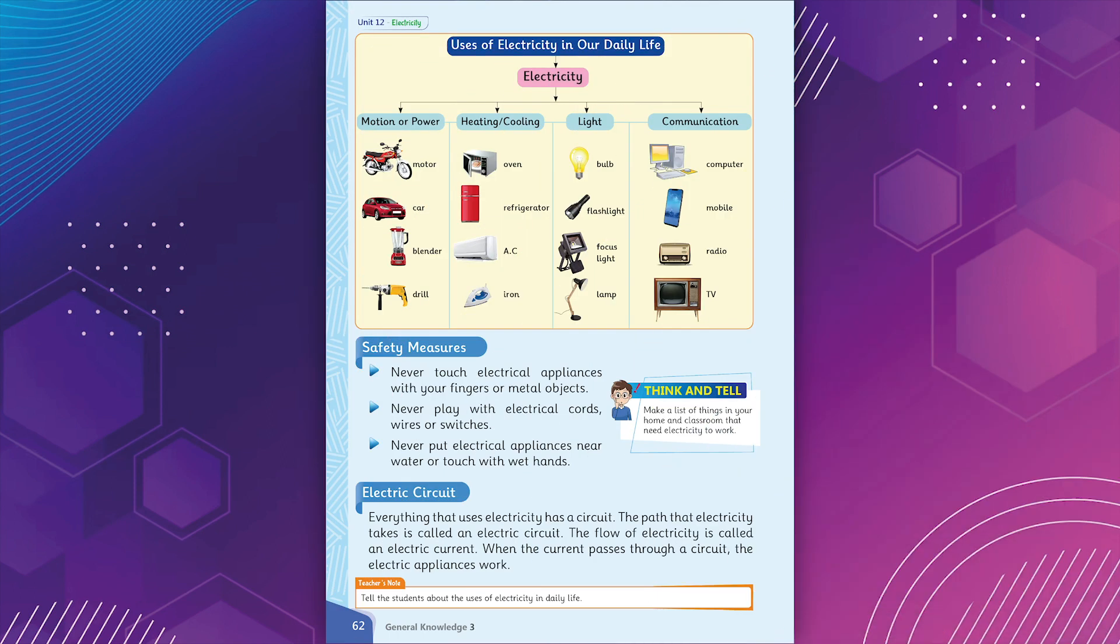Safety Measures. Never touch electrical appliances with your fingers or metal objects. Never play with electrical cords, wires or switches. Never put electrical appliances near water or touch with wet hands.